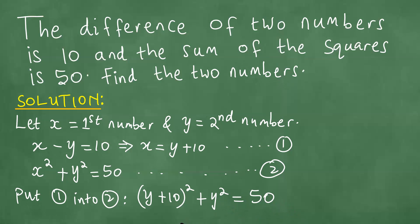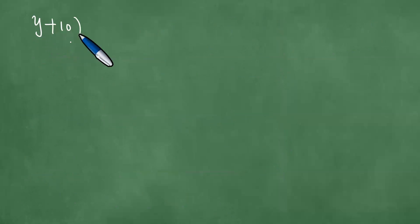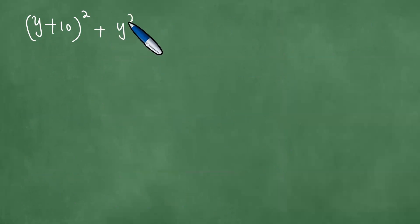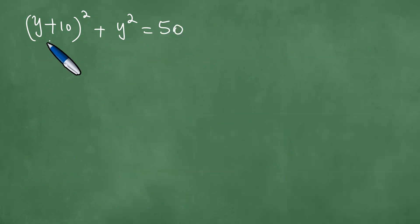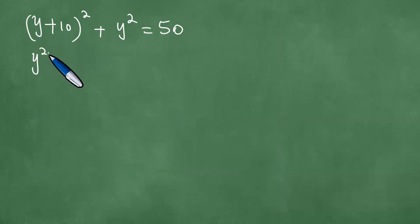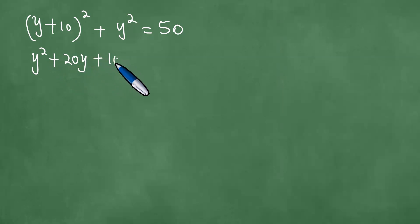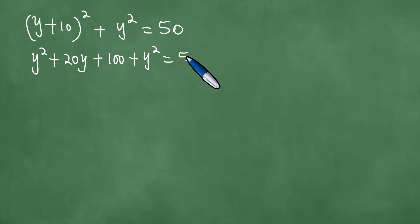So we proceed with this and we solve: (y plus 10) squared plus y squared equals 50. If you square this, you get y squared plus 20y plus 100 plus y squared equals 50.